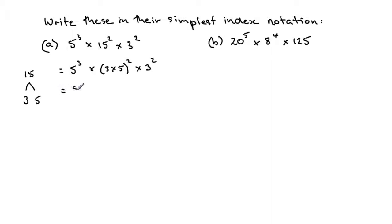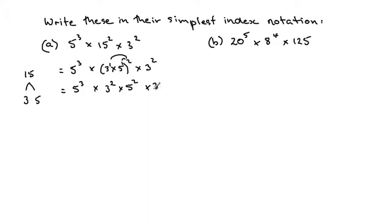Using our index rules — remember there's a 1 here and a 1 here — when we have a bracket with a power to a power, we multiply the indices. So we get 3 to the 1 times 2, and 5 to the 1 times 2, giving us 3 squared and 5 squared. Then on the end we still have our 3 squared.